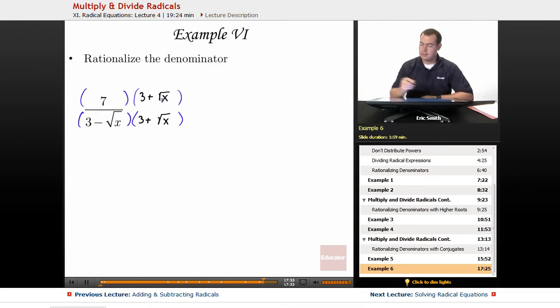Let's see what this does to the top as we distribute. Remember that on the bottom, we will FOIL. I get 21 plus 7 times the square root of x for the top.